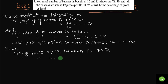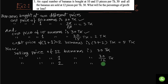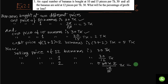The selling price of 1 banana is 30 divided by 12. We have to find out the selling price of 2 bananas. The selling price of 2 bananas is 30 multiplied by 2 divided by 12 taka. If we simplify, we get 30 divided by 6, which equals 5. So we get 5 taka.